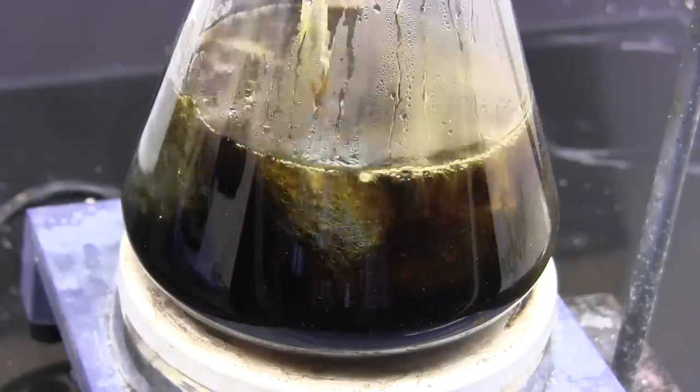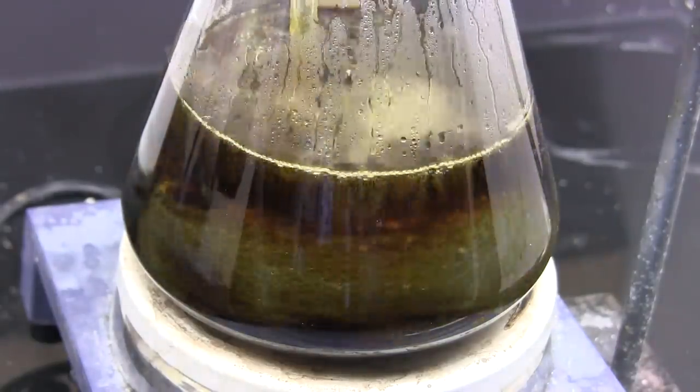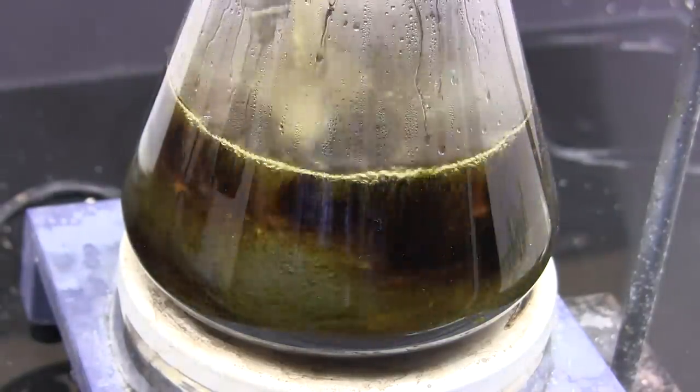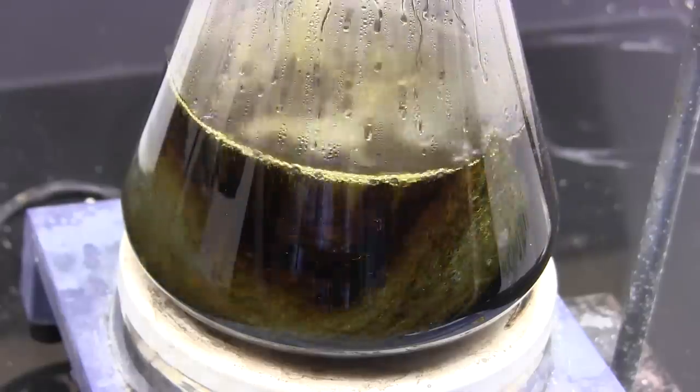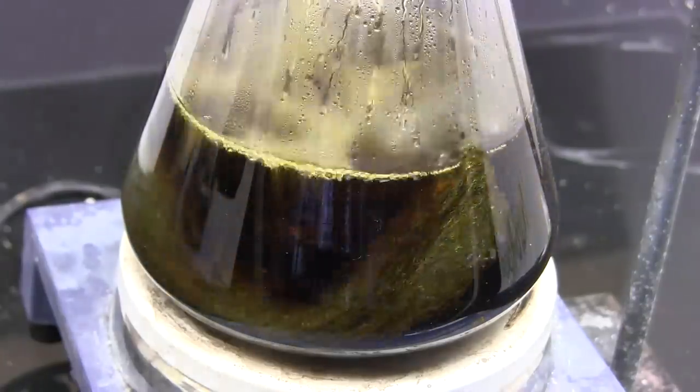Now if you happen to have anhydrous ferric chloride you can add that directly as a catalyst. Using steel wool is a cheaper amateur way of making ferric chloride in situ since we're already injecting chlorine gas.